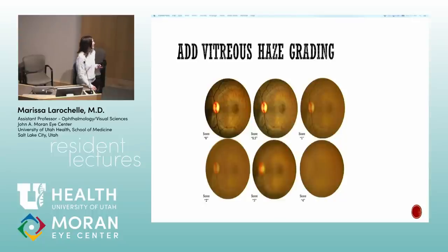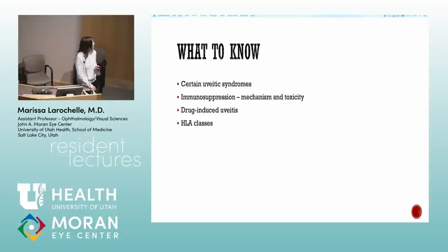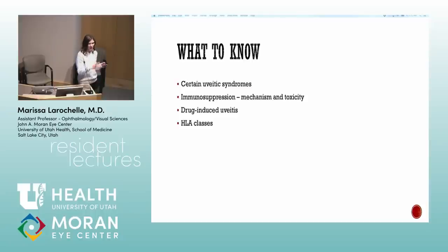Vitreous haze grading is based on how well you can make out the nerve. One-plus is kind of hazy; at three-plus you're having real trouble making out nerve details; four-plus and you can't see the nerve. This review will cover uveitic syndromes — there are many of them — as well as immunosuppression and drug-induced uveitis.